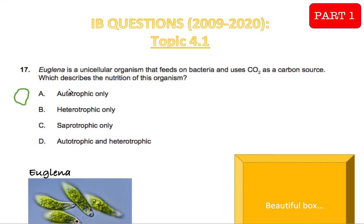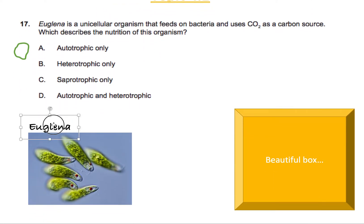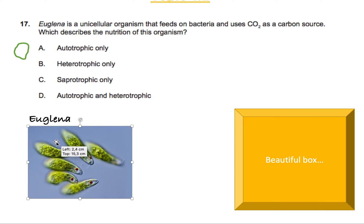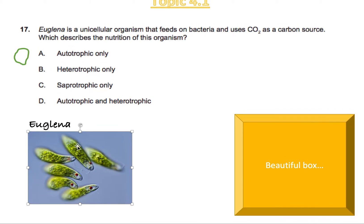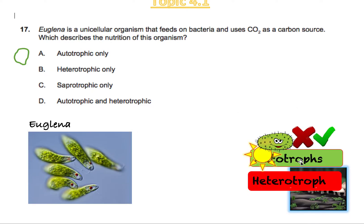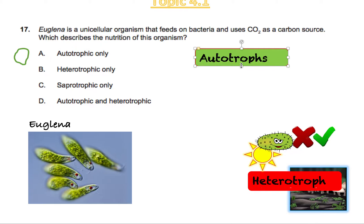Let's go through the options. If you didn't know, euglena is one of those creatures you need to remember for the IB because they're special — and you'll see why. This is how they look. So, what is an autotroph? An autotroph is a creature that is like a plant — able to survive by photosynthesis. Basically all plants, about 99%, are considered autotrophs because they survive by making their own food using photosynthesis.